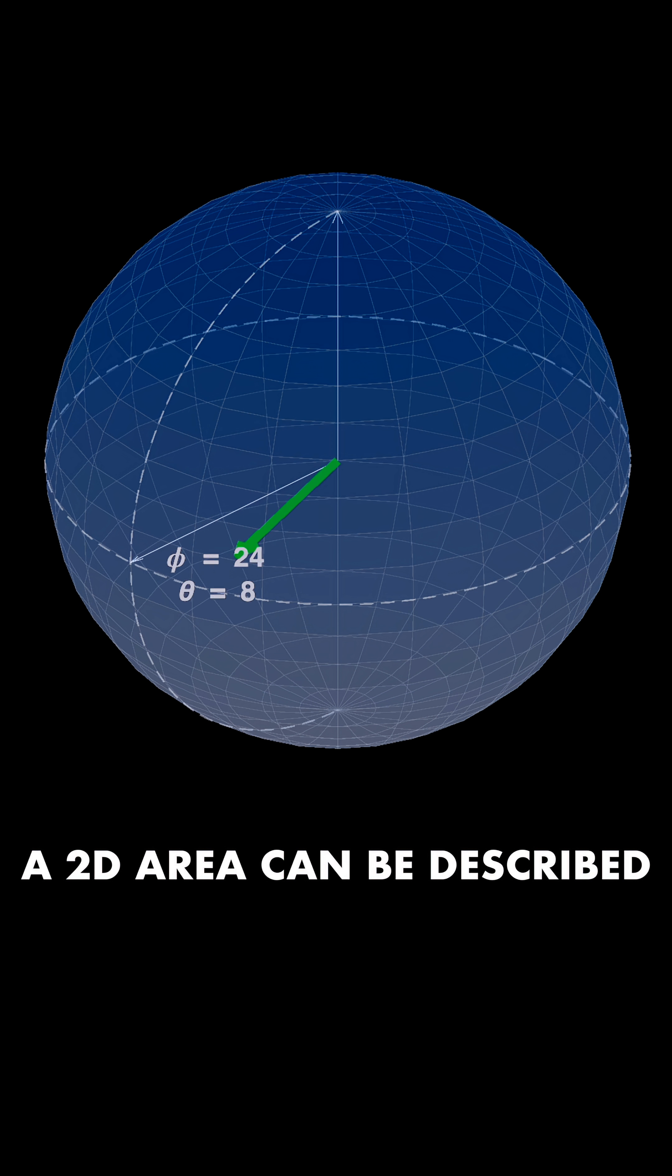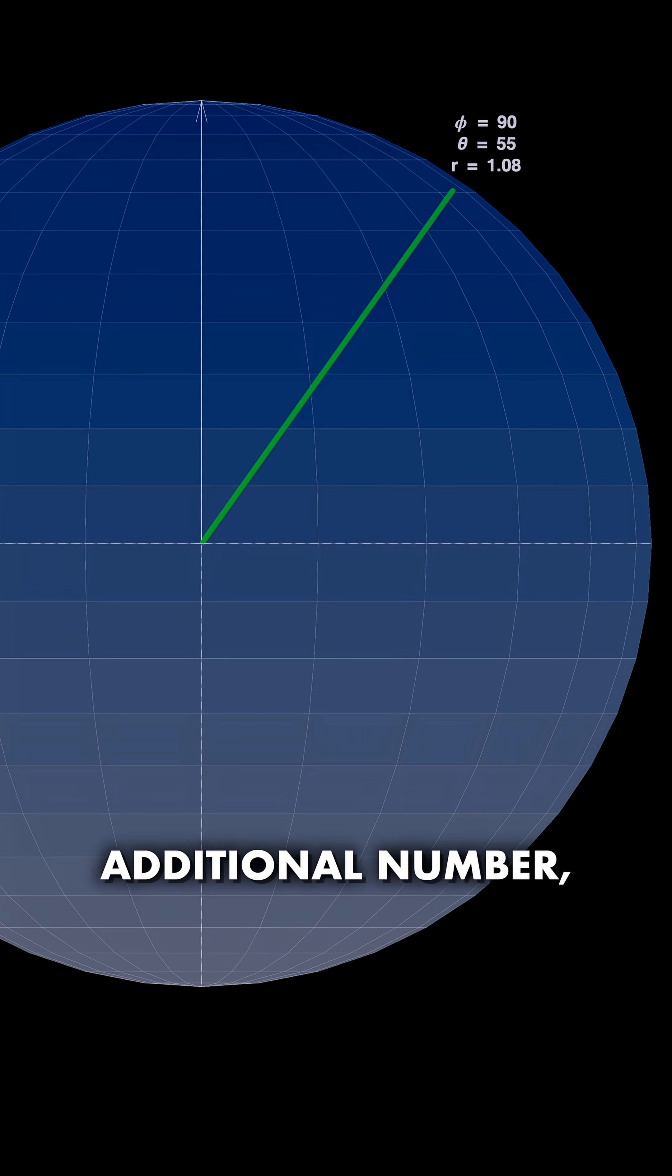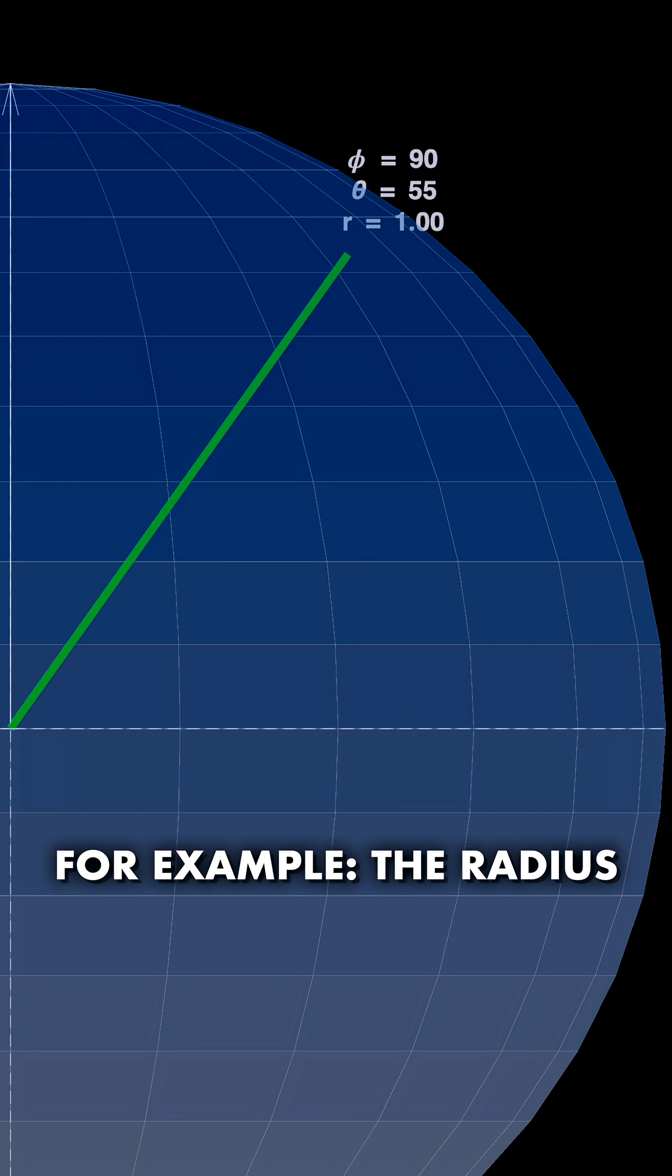A 2D area can be described by two numbers, like the surface of the Earth, with latitude and longitude. 3D requires an additional dimension, an additional number. For example, the radius, the distance from the center. You could be on the surface, or below the surface, or even far above it.